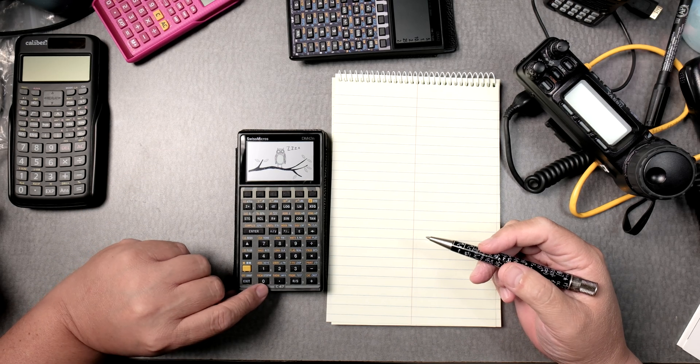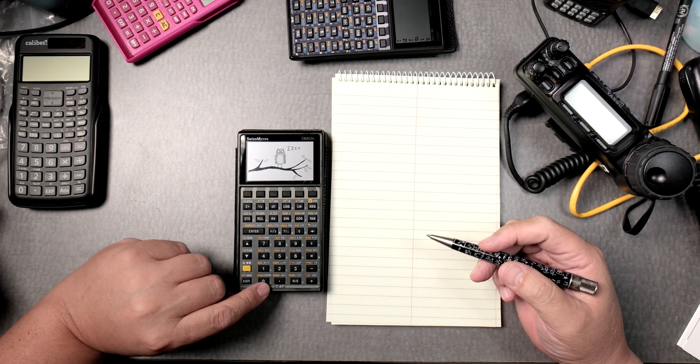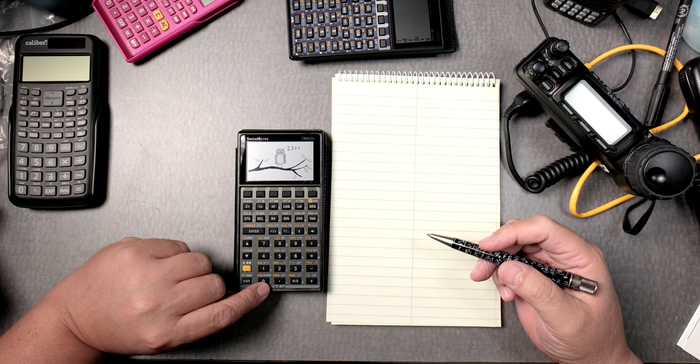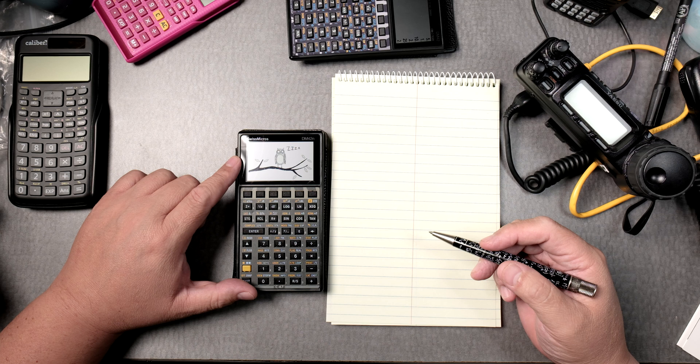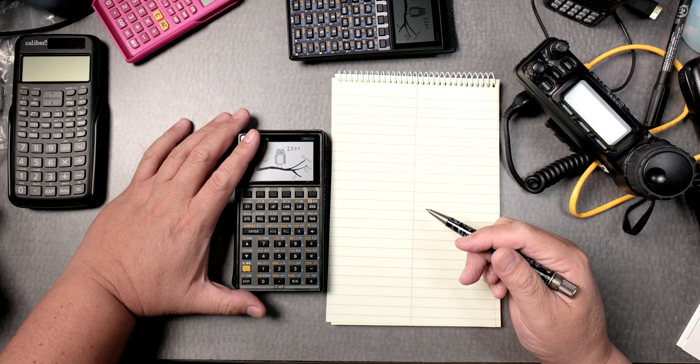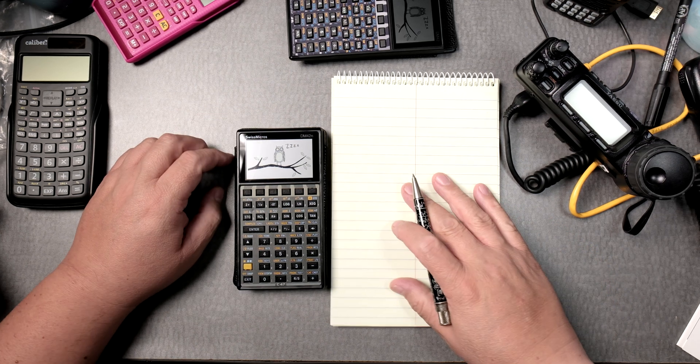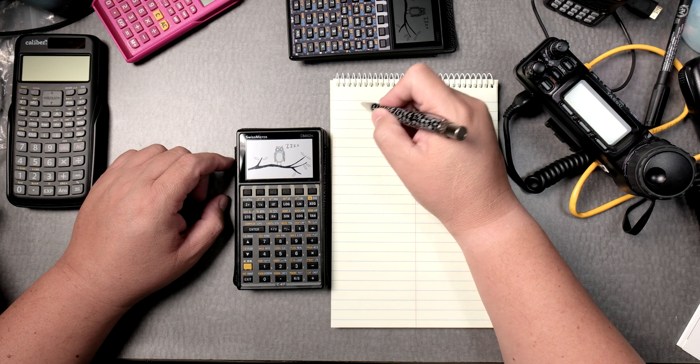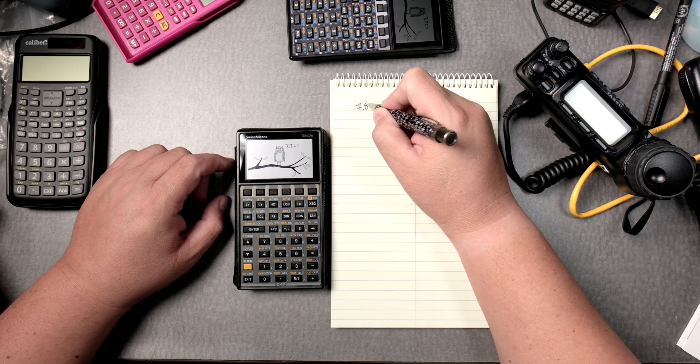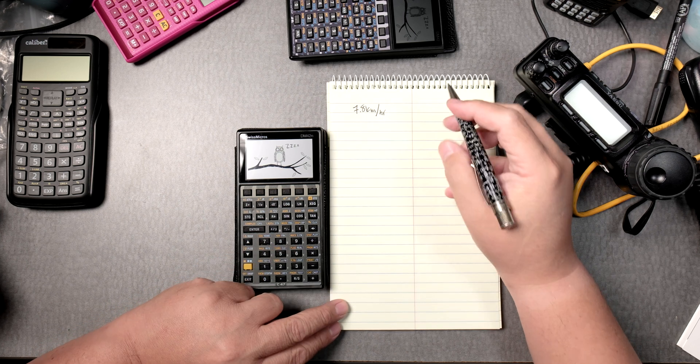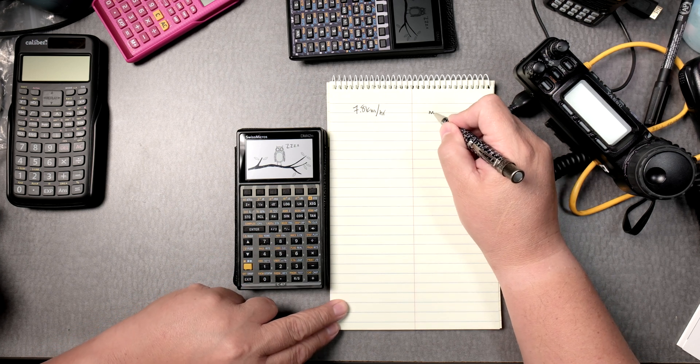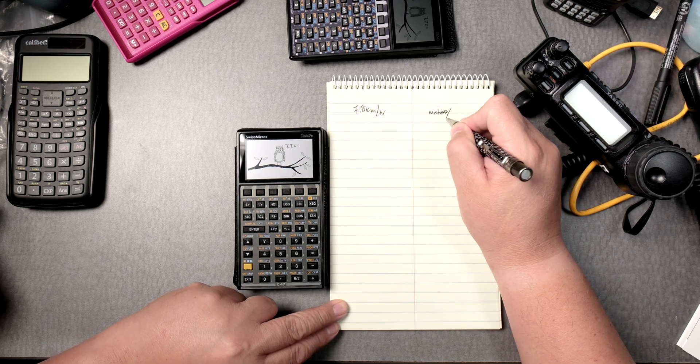We are going to take the C47 software that runs on a Swiss Micro DM42N and do some dimensional analysis problems. Just two, really. Let's say you had 7.8 kilometers per hour, and you want to change that into something like meters per second.